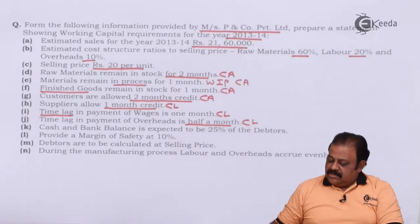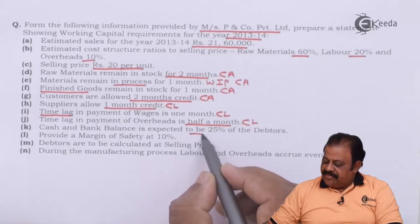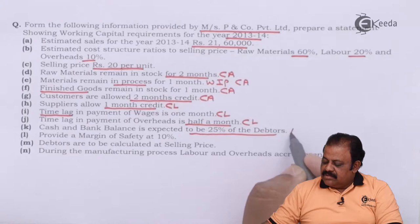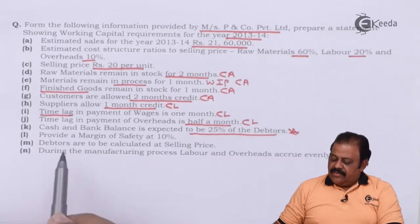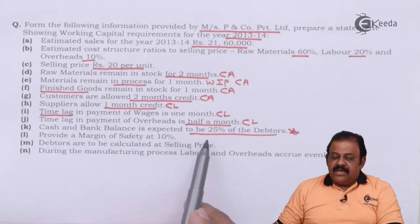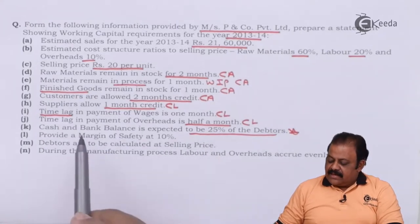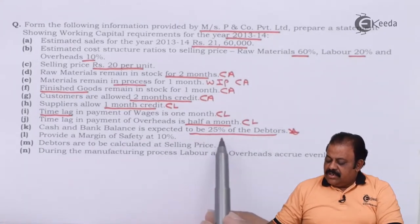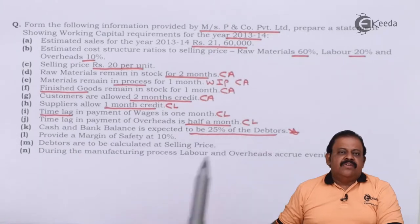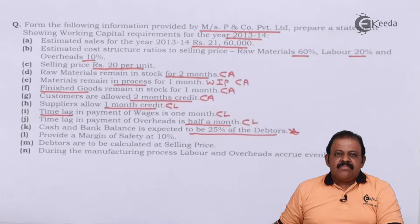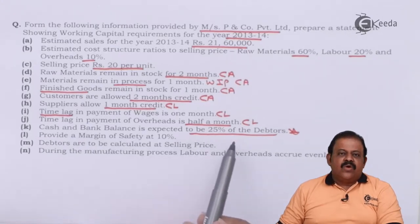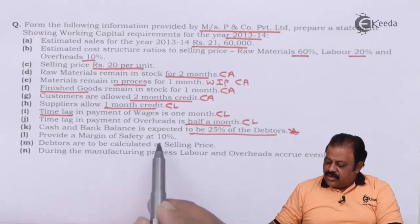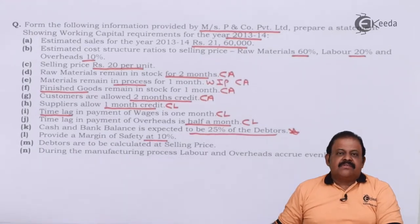Cash and bank balance is expected to be 25% of debtors. This is a new kind of information — the amount of cash and bank balance to be kept is not given directly. They say cash and bank balance should be kept equal to 25% of debtors, so we have to calculate debtors carefully. If the calculation of debtors goes wrong, the calculation of cash and bank also goes wrong.